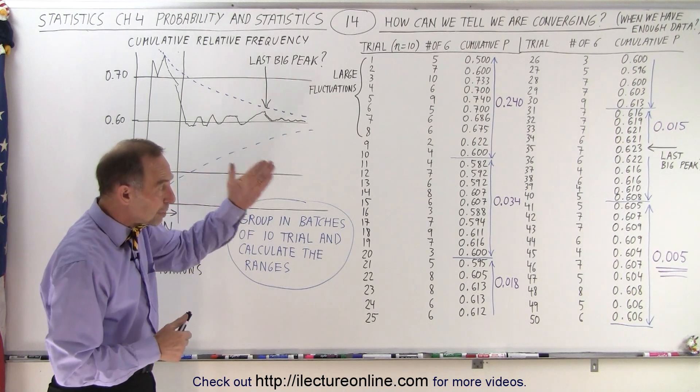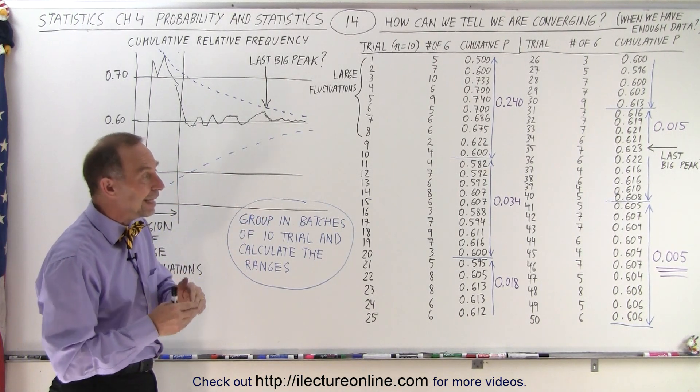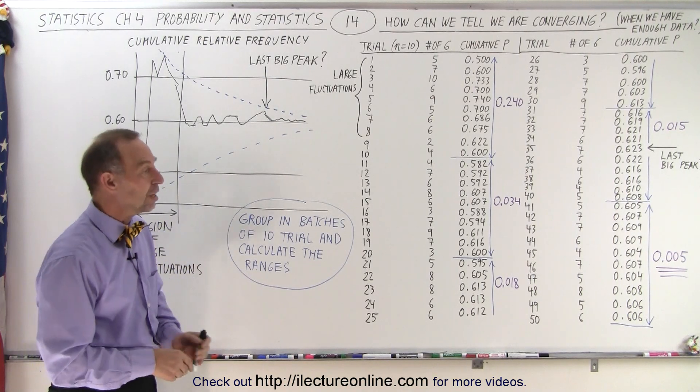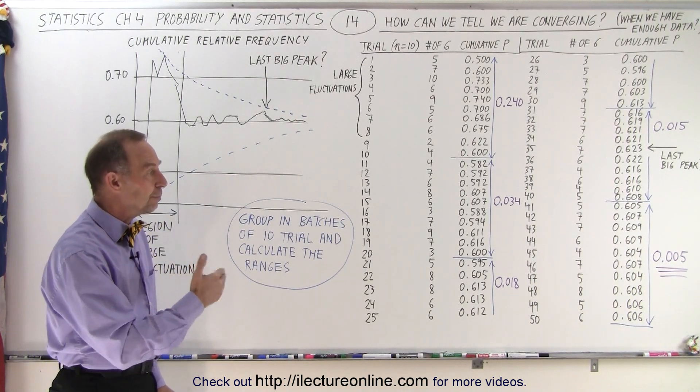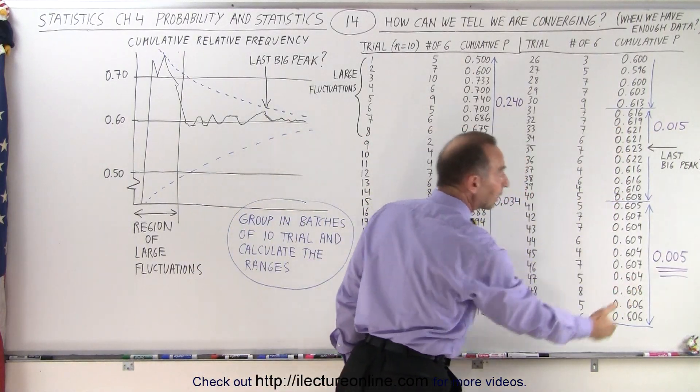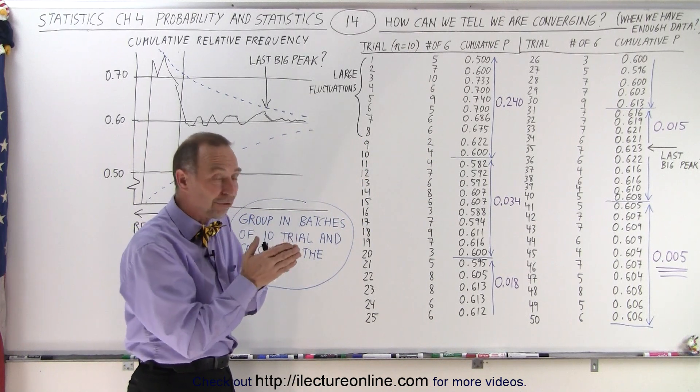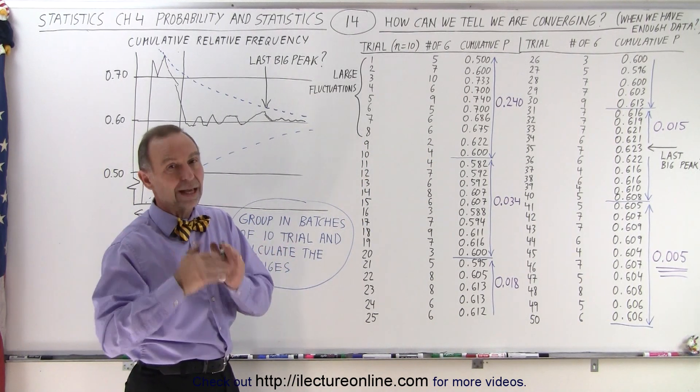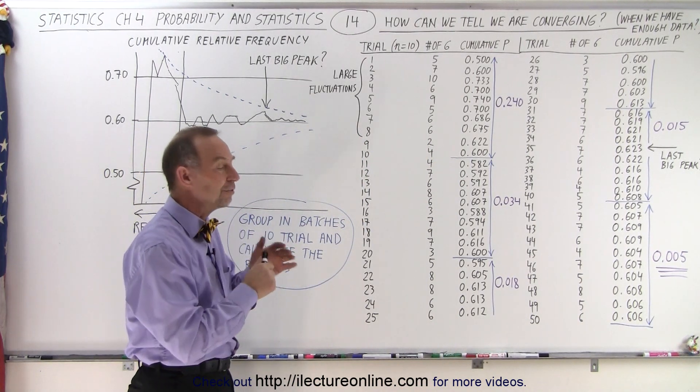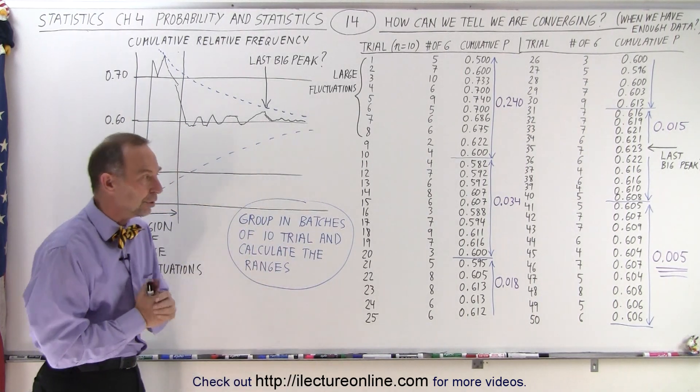And that's a really good way to see if you've collected enough data or if things are continuing to change. For example, you want to make sure that as long as this number remains large, you simply want to collect more and more data. When the number becomes very, very small and it does that for several consecutive groups, then you're probably home free and you've got enough data to make reasonable conclusions.